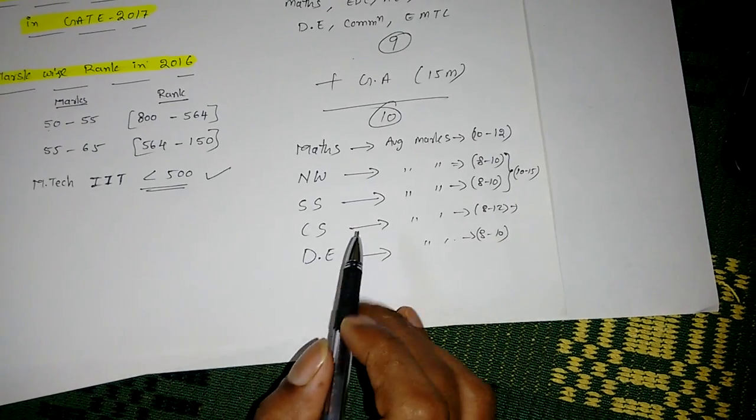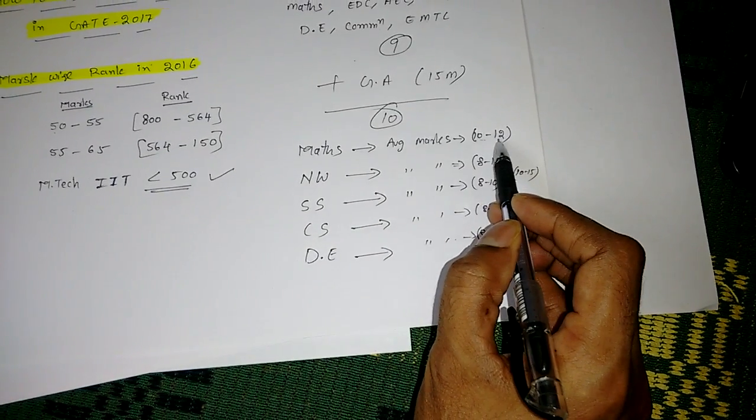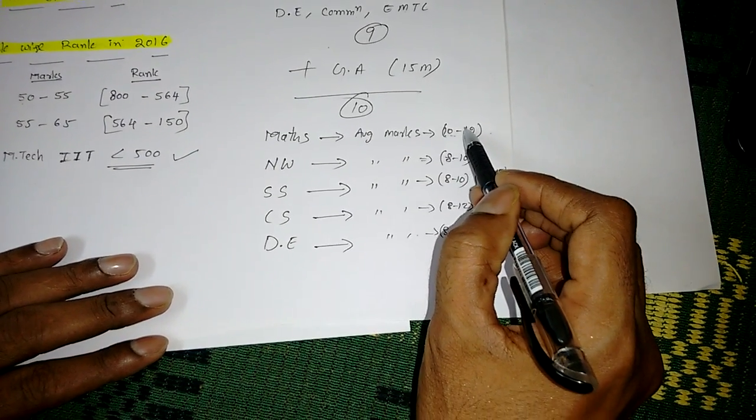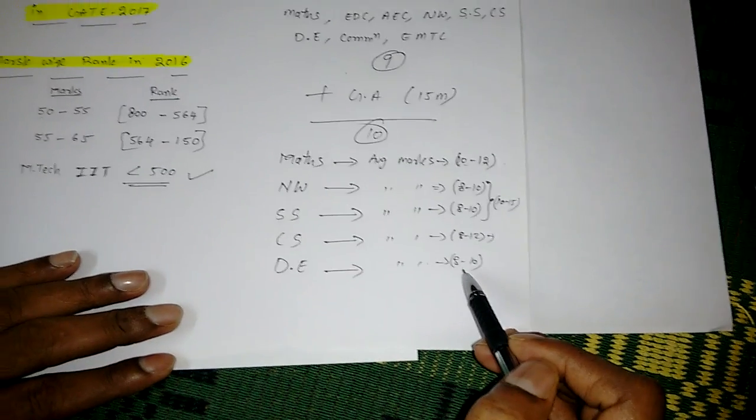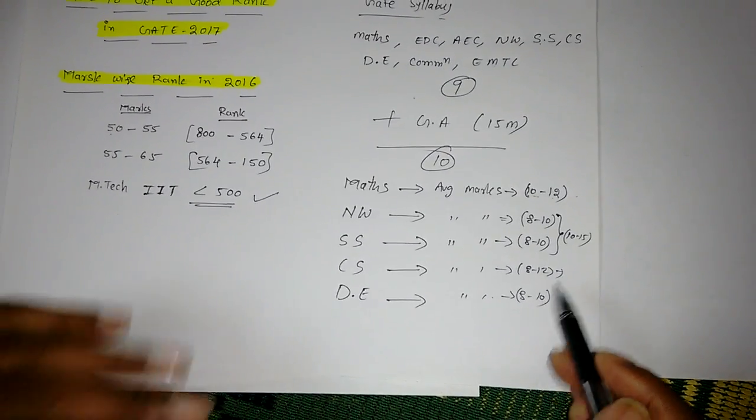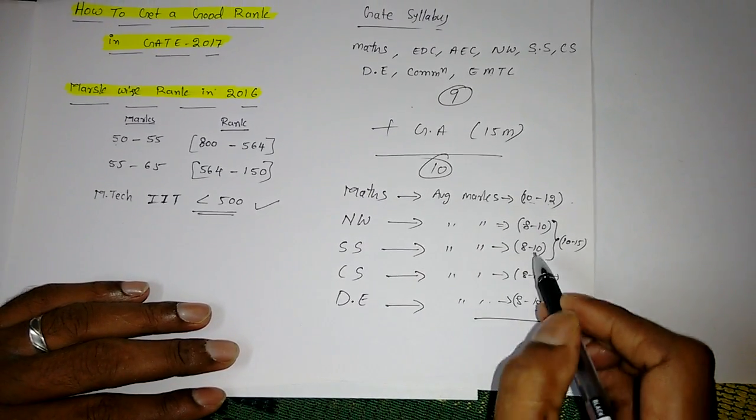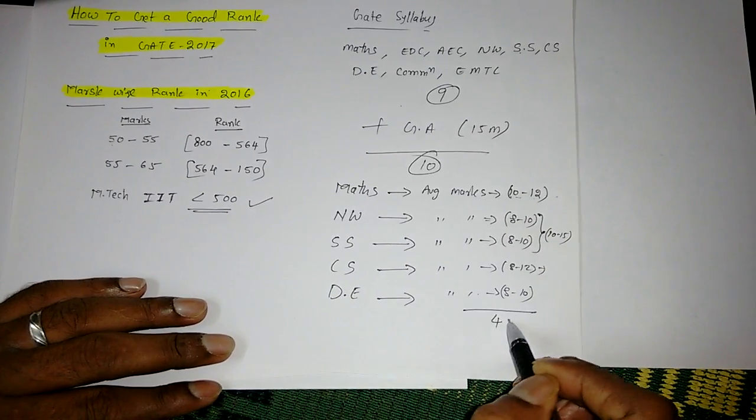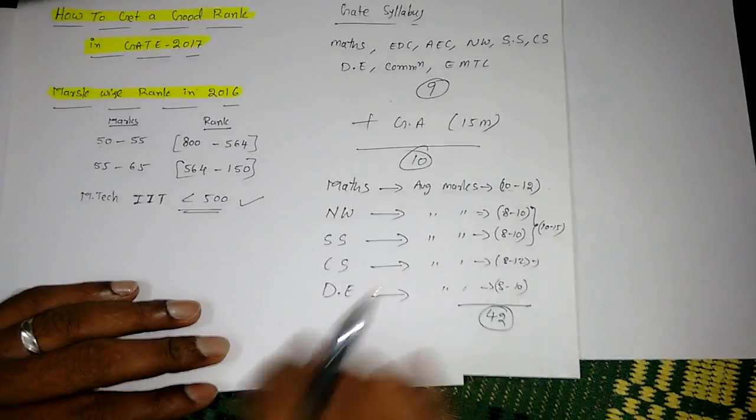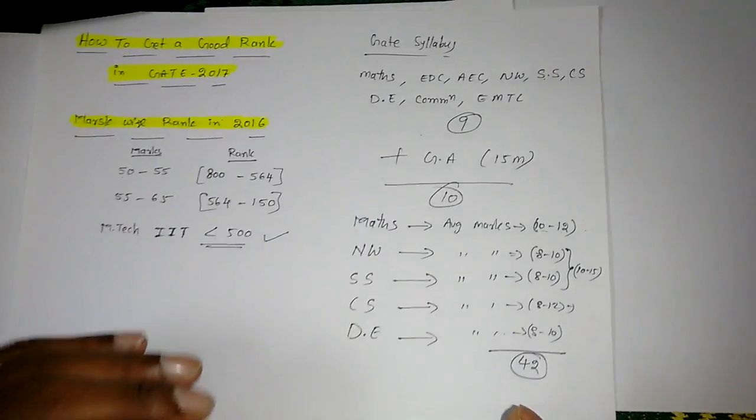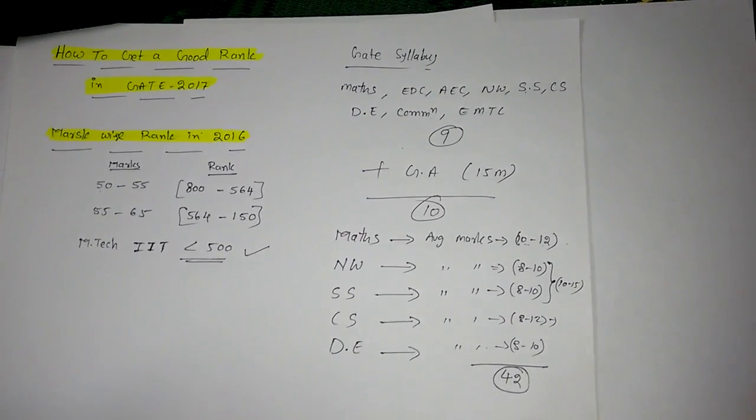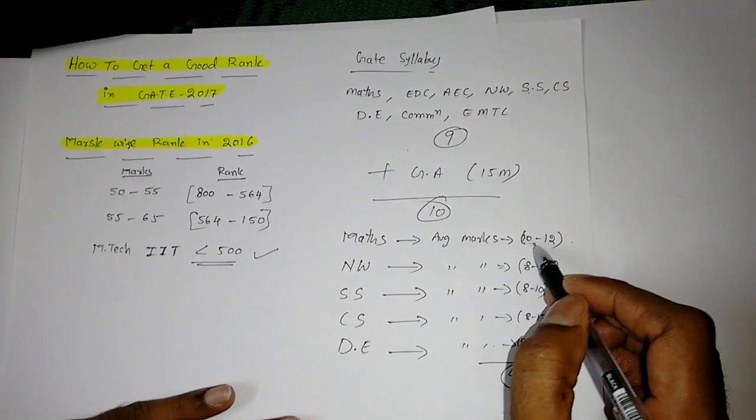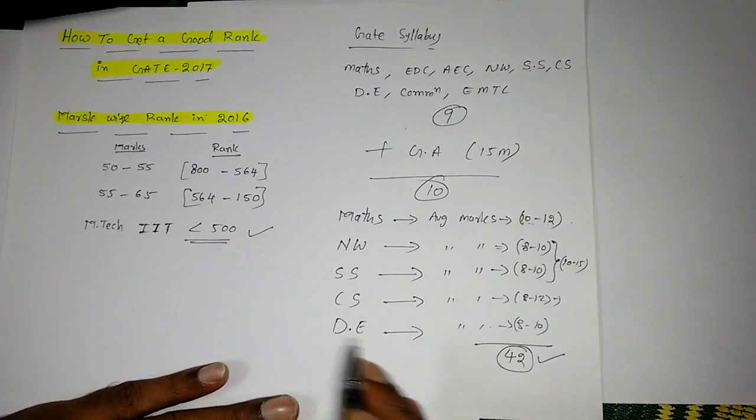The trick here is if you focus on these five subjects, you have to show 100%. That means when 10 to 12 marks are coming from Mathematics, at least you should score 10 marks out of 12. Here also, minimum 8 marks you should score. If you are scoring from these five subjects, these four at least 8 and this is 10, so 32 plus 10 equals 42 marks you can score from these five subjects.